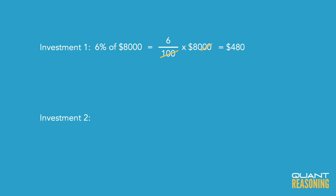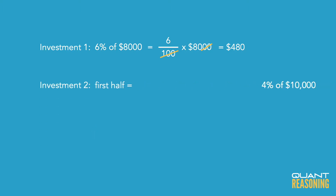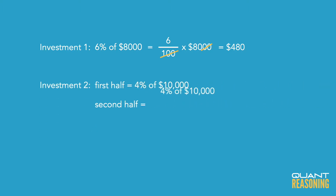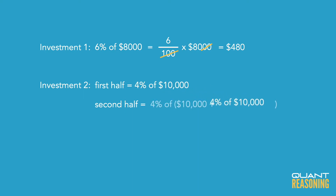That's all it means. If we think about that conceptually, what it translates into at the end of the day is a little bit of extra interest, because you're not only getting interest on the principal in the second half of the year — you're also getting interest on the interest you earned in the first half of the year. Interest on interest. So that's going to give you a little bit extra.